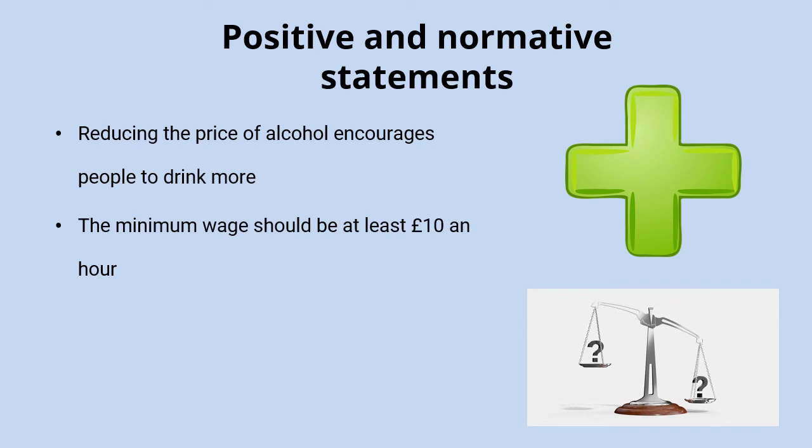'Minimum wage should be at least £10 an hour' — this would be a normative statement because some people would agree with that, some people would think it should be higher, and some people would think it should be lower. 'Cutting interest rates increases house prices' would be a positive statement because we can look at the data on house prices, compare that to data on interest rates, and test whether that assumption holds true.